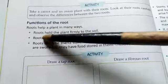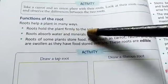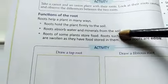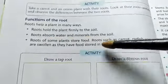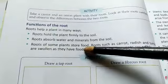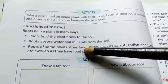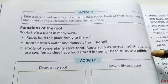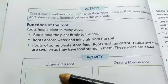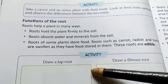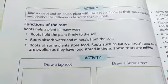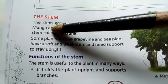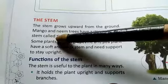Now, the functions of the root. First, roots hold the plant firmly to the soil and help the plant stand straight. Second, roots absorb water and minerals from the soil. Third, roots of some plants store food — roots such as carrot, radish, and turnip are swollen because they have food stored in them, and we eat them as vegetables.